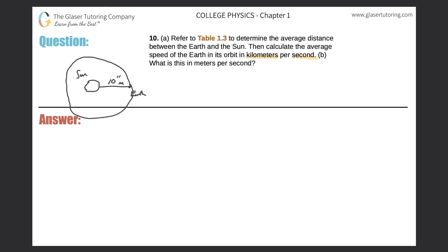So here's the circle. If I need to calculate the distance of the circumference — that's what this represents, this particular distance — I can do that by using the circumference formula. So the circumference of a circle is equal to two pi times the radius.